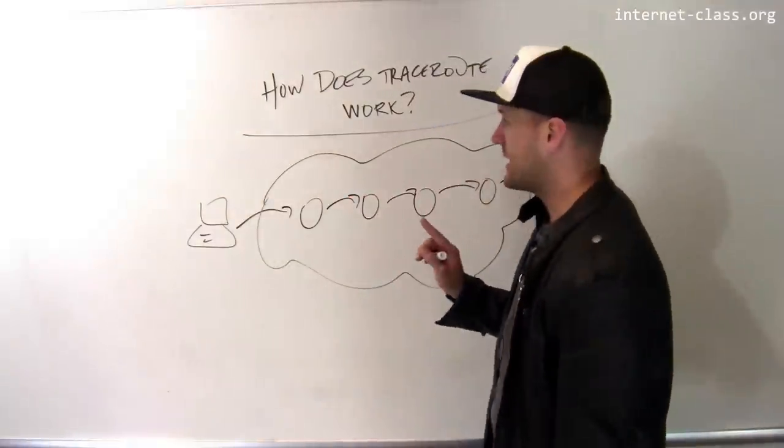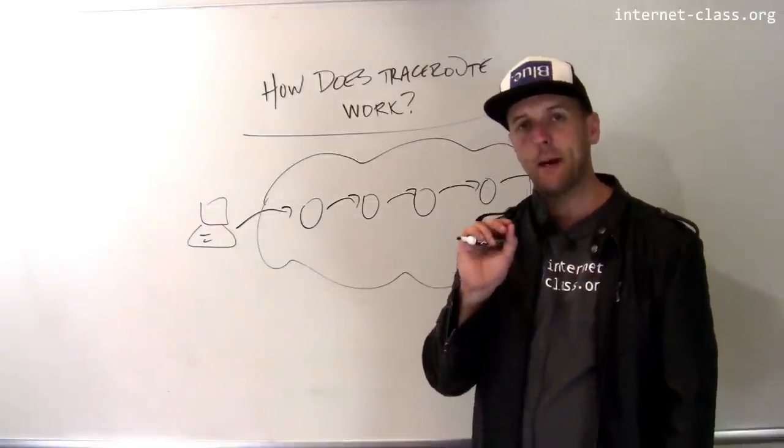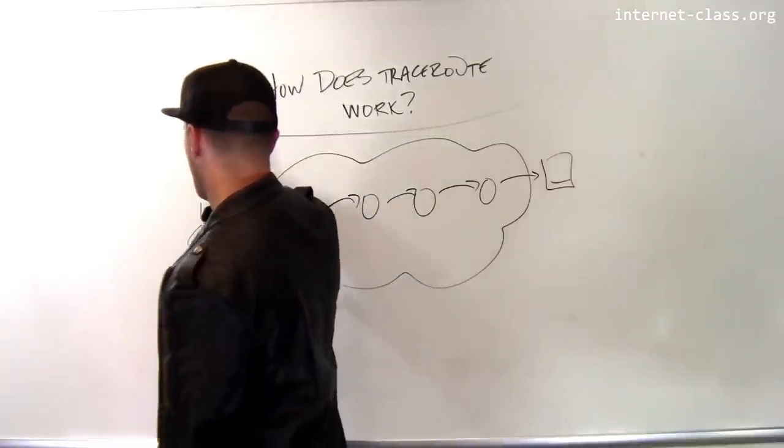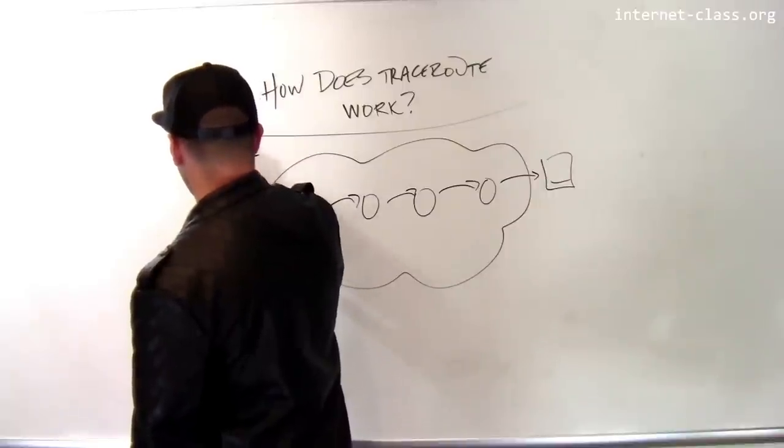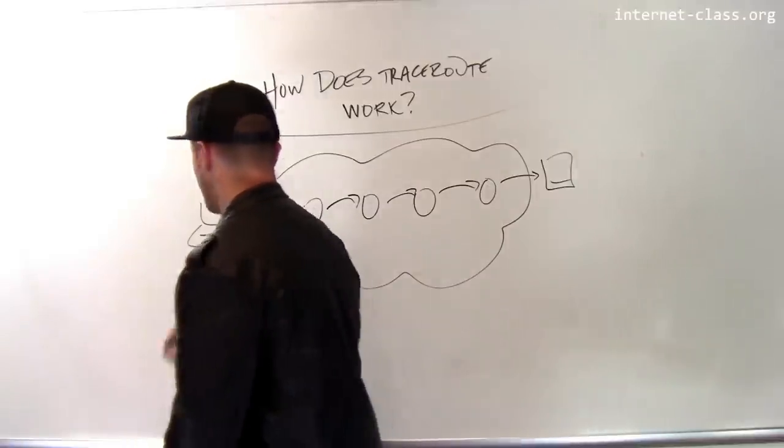TraceRoute works in this very clever way, and it exploits a field in the IP packet header. So the IP packet includes, along with the destination and the source IP addresses, it also includes this field called the time to live, or TTL.